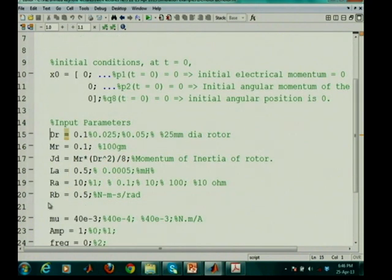Then, we specify the parameters. Parameters, we take the diameter of the rotor drum to be 0.1 meters that is 100 millimeters and MR that is mass of the rotor as 0.1 that means 100 grams and we take the momentum of the inertia of the rotor as MR into DR square divided by 8. This is actually if you take it as a cylindrical solid.